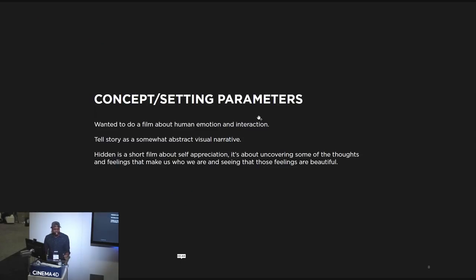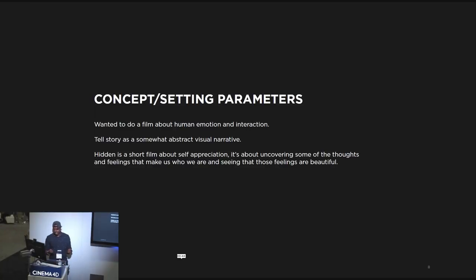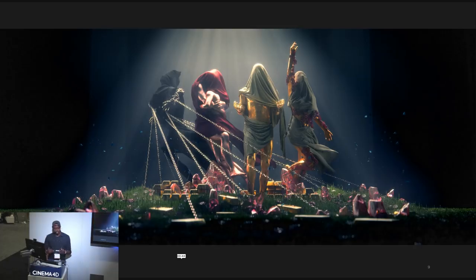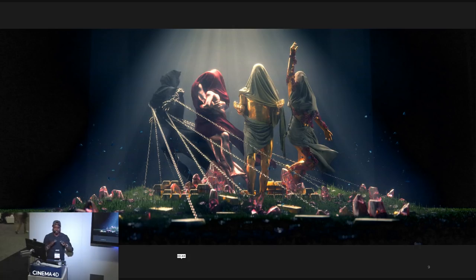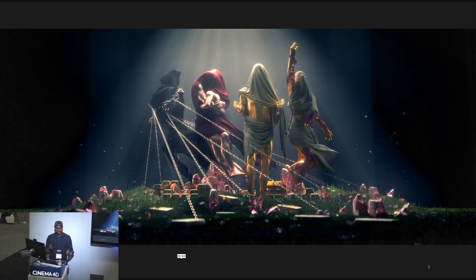The other thing I needed to figure out was the concept and setting some parameters to the film — just kind of closing in the world we're creating. I wanted to do a film about human emotions and human interactions. I also knew that I wanted the story to be a little bit whimsical and abstract. I didn't want to tell a very literal film. So the film itself is about self-appreciation — uncovering some of the thoughts and feelings that make us who we are that we don't necessarily show to each other.